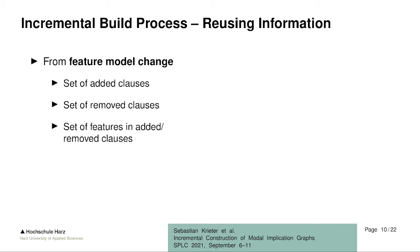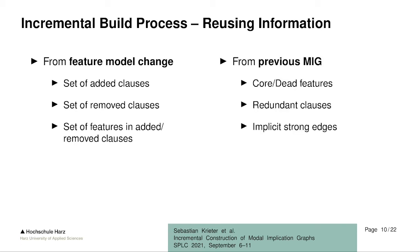It might be that other features are also influenced by new anomalies when we change the feature model. But features in the changed clauses are more likely, and we can exploit this fact using heuristics. Then we have the previously built MIG: since we did all the analysis in the original build process, we can reuse those results — a list of core features, a list of redundant clauses, and a list of implicit strong edges.